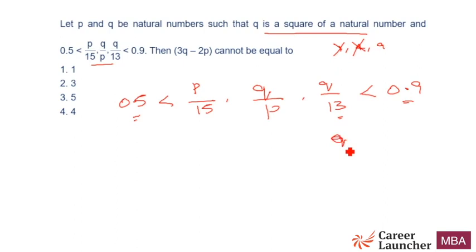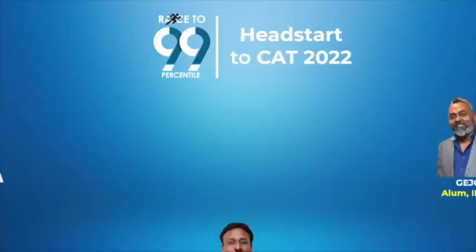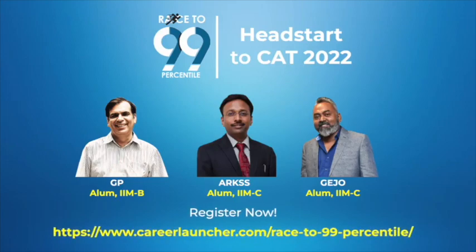So Q equals 9. What we need to find is 3Q minus 2P. What is 3Q going to be? 27. And 2P is going to be even. When you subtract an even number from an odd number, you get an odd number. So what cannot it be equal to? It cannot be equal to 4 because 4 is an even number. I don't need to do the rest of the calculations.